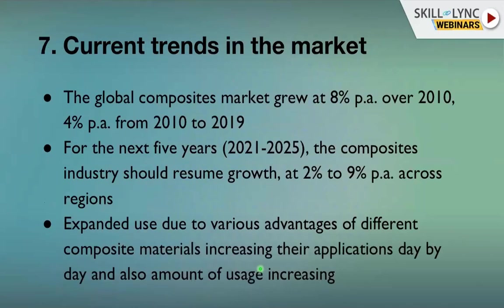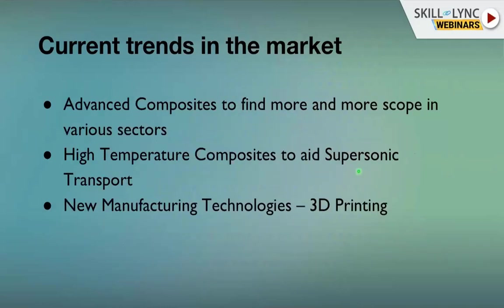The global composite market grew at 8% over 2010, then around 4% from 2010 to 2019. For the next five years it is projected to grow up to 9% per annum across regions, driven by the advantages of composite materials and increasing applications across aerospace, automobile, construction, wind turbine, renewable energy, electrical, electronics, and chemical industries.